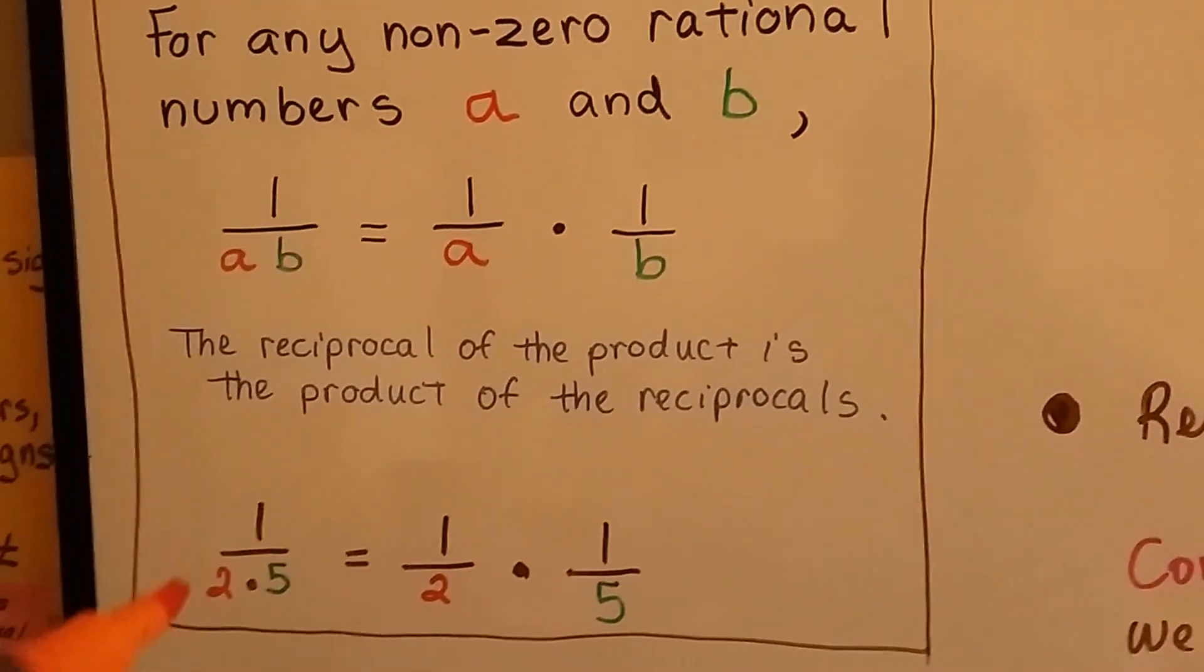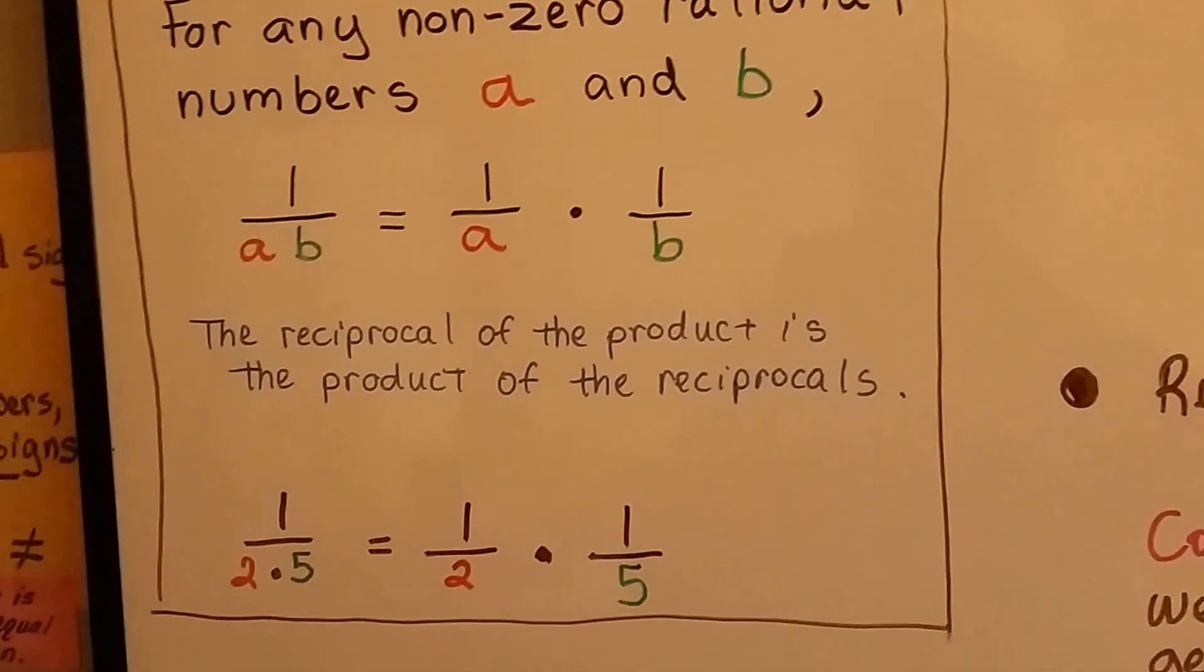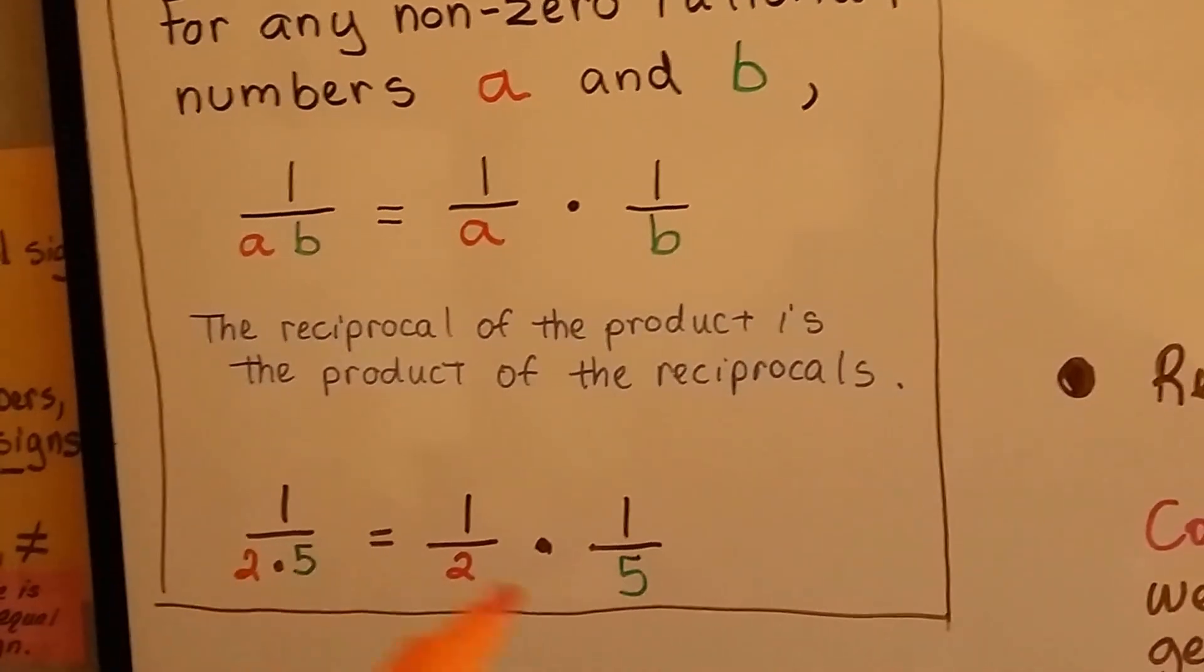It's like saying if we had 1 over 2 times 5, it's going to equal 1 over 2 times 1 over 5. This is 1 tenth and that's 1 tenth.